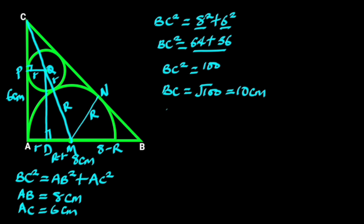From the figure, AC equals CN, which is 6 centimeters. Reason: tangents drawn from an external point are equal. Hence, BN equals 10 minus 6, which is 4 centimeters.